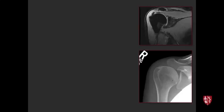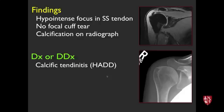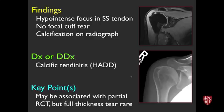Next case: coronal MRI and radiographs. There's a hypointense focus in the supraspinatus tendon with no obvious cuff tear, and calcification on the radiograph. This is a classic example of calcific tendinitis — hydroxyapatite deposition disease. A useful point: it's very rare to have a full-thickness tear when you identify HADD. There may be partial thickness tearing, but usually patients present with pain before the cuff is completely torn.